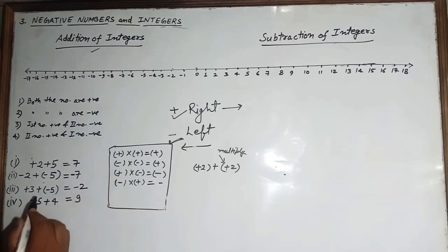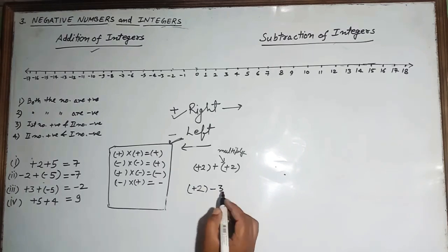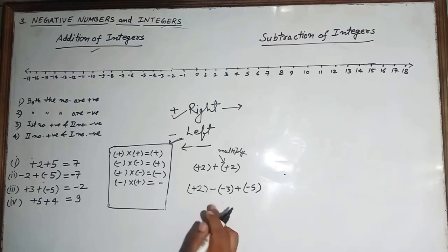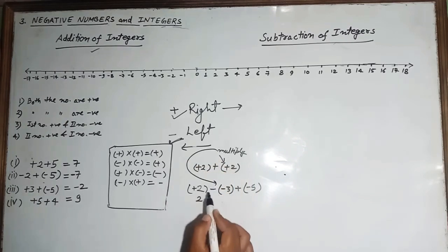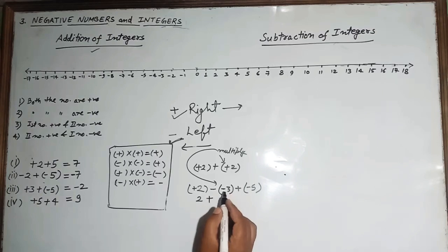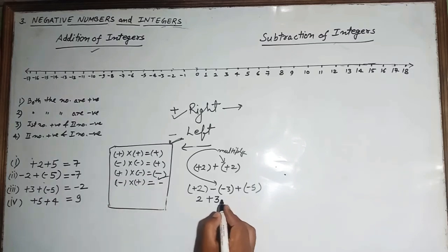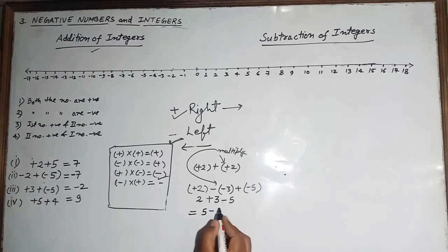Continuing the sign chart: plus into minus is always minus, and minus into plus is always minus. For example, if we have plus 2 minus minus 3 plus minus 5, after opening the brackets: plus 2 stays as 2, minus into minus becomes plus 3, and plus into minus becomes minus 5. So we get 2 plus 3 minus 5.